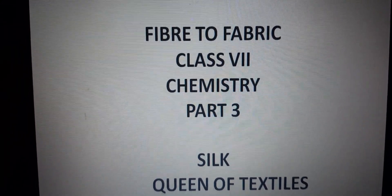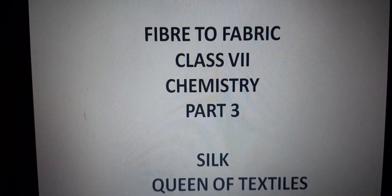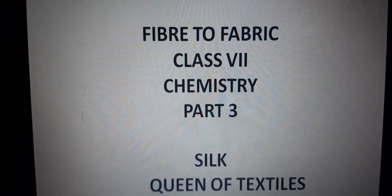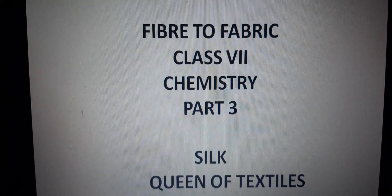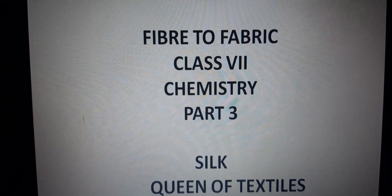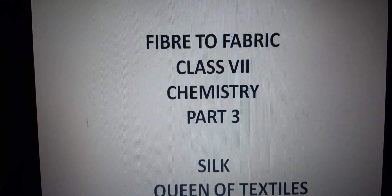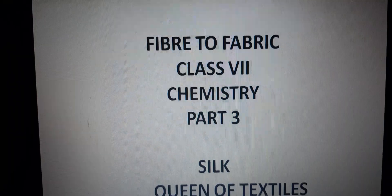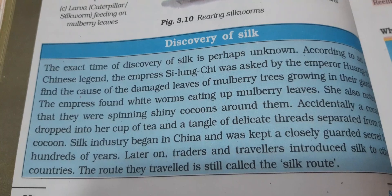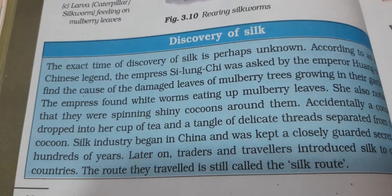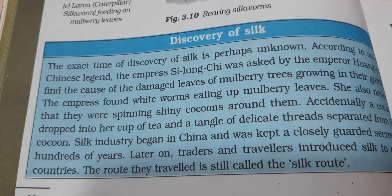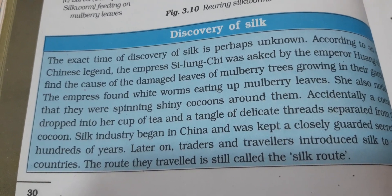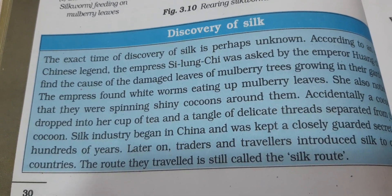Before we proceed further, I want everyone to take out your classwork copy and pen and write down the important points being discussed in the video. Silk is known as the queen of textiles. It is believed that the production of silk occurred nearly 5000 years ago in China.